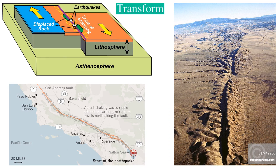The last type is transform boundaries. When two plates slide past one another in opposite directions, this creates cracks or faults in the earth's crust. As the plates start to move, they rub against one another, resulting in a buildup of pressure. If plates are stuck for a longer period of time, pressure continues to build along the fault line, and that pressure is released in the form of earthquakes. The San Andreas Fault is the largest transform boundary in the world and is an example of this.